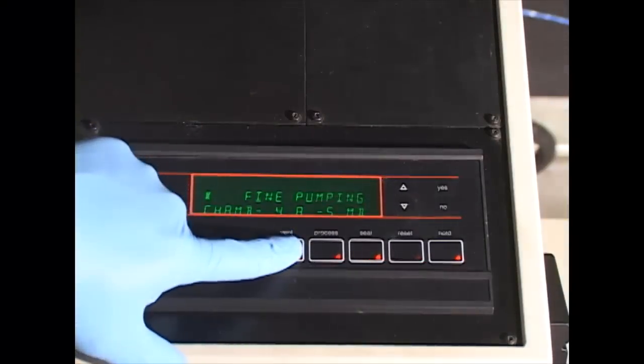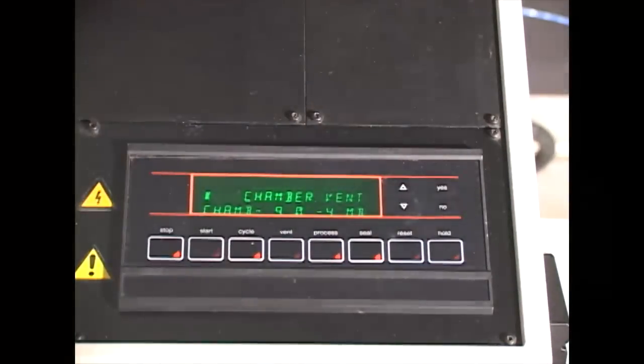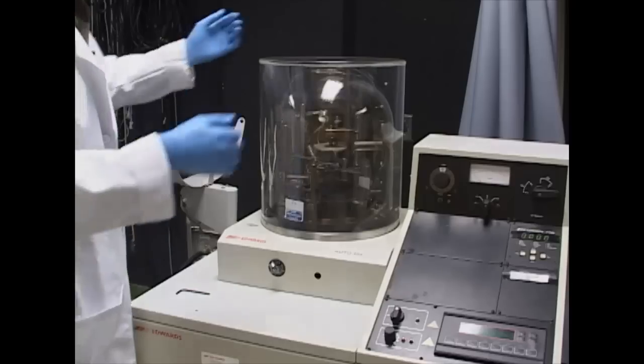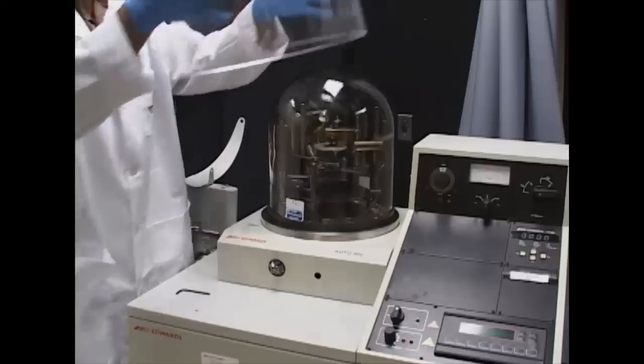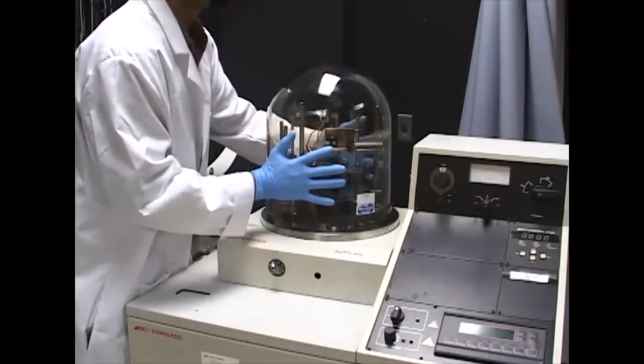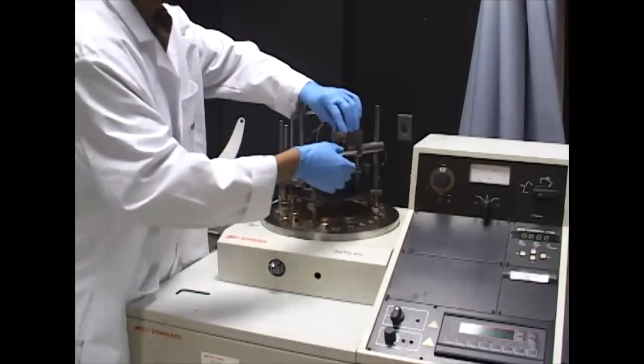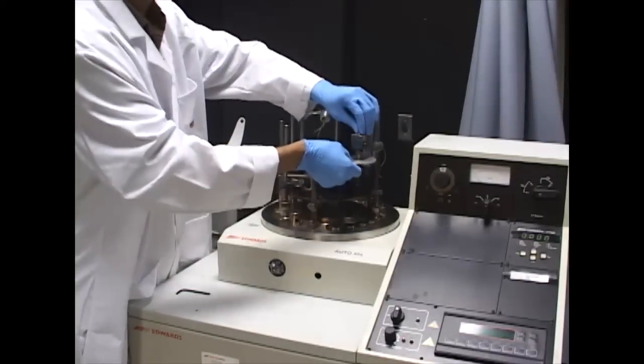Now we press vent. We can observe the pressure rapidly increasing from vacuum to room atmospheric pressure. Now we can remove our external implosion shield. For our bell jar, we have to gently remove it, making sure it's back to atmospheric pressure. And now we can remove our substrate.